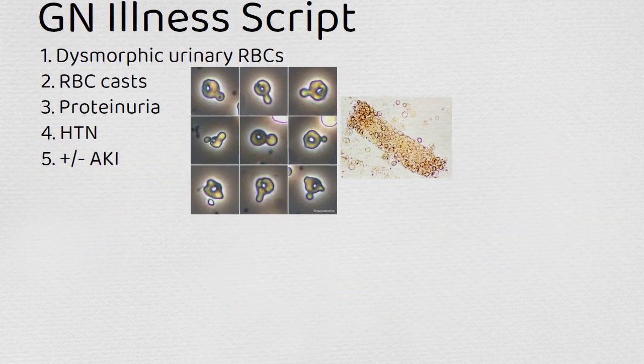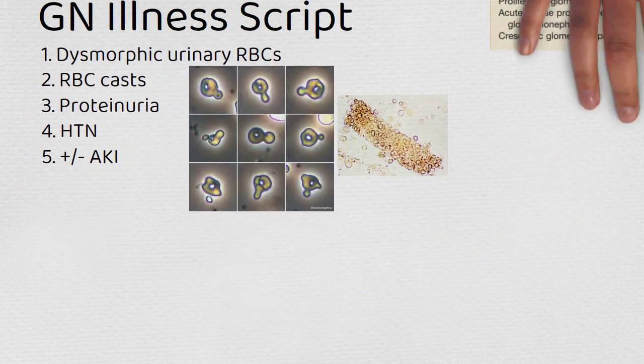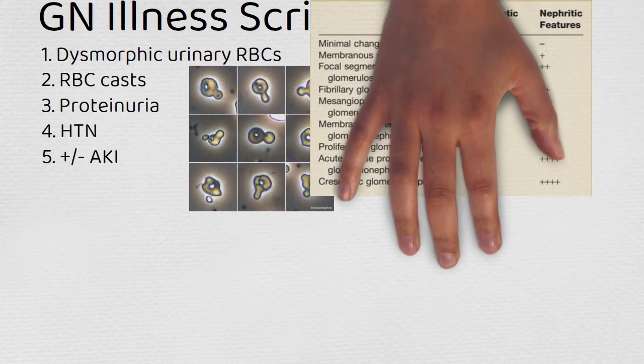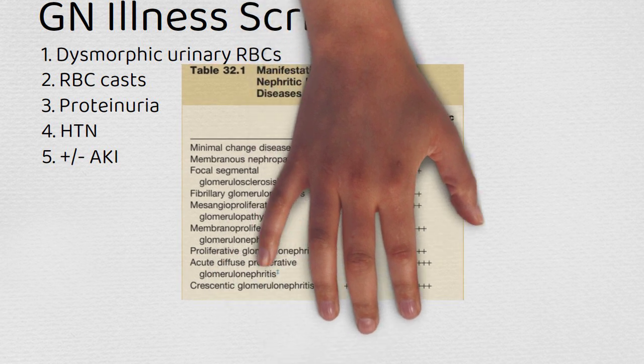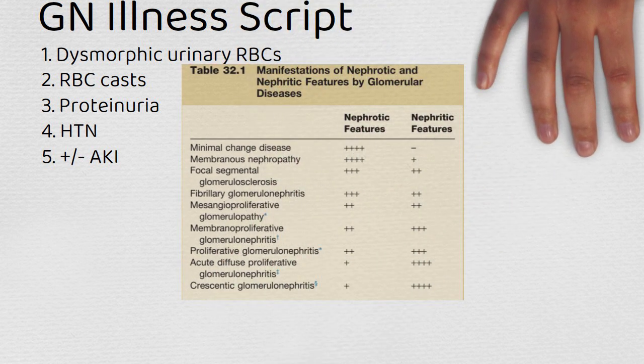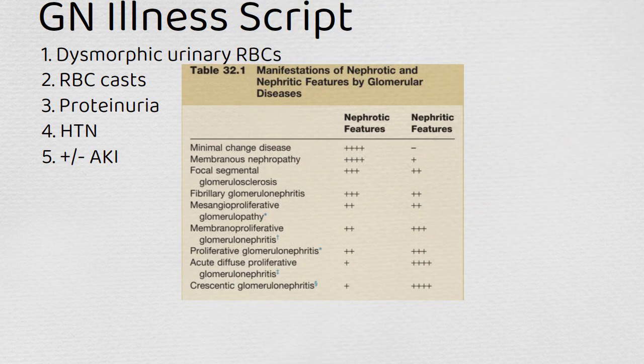In clearing up the proteinuria, it's important to understand there's a lot of overlap between nephritic and nephrotic, and not all diseases strictly follow one. But we're usually talking sub-nephrotic range, though some nephritic diseases can reach nephrotic range.